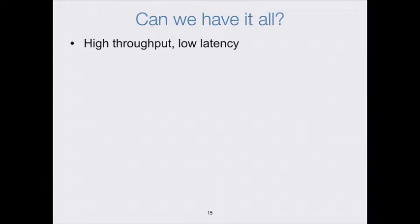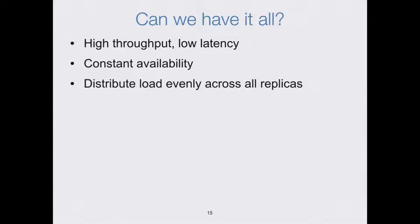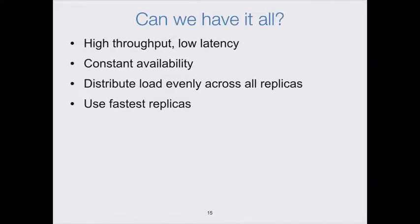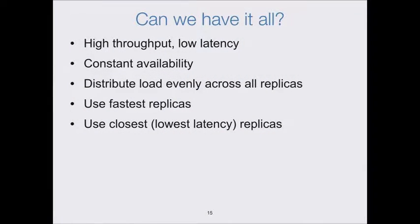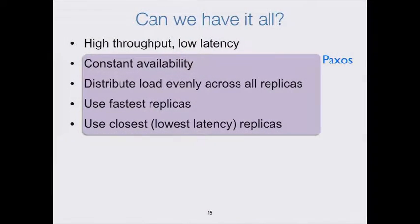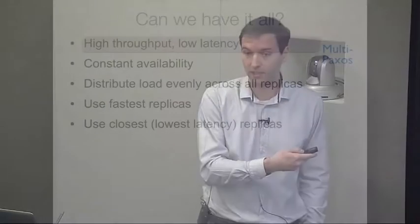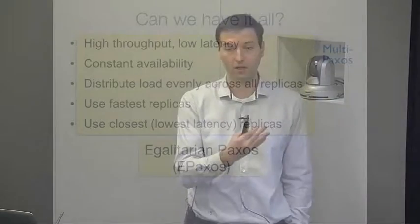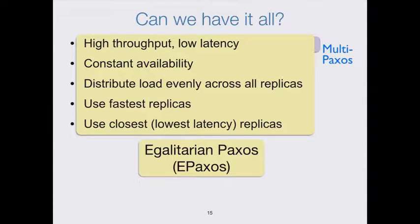The question that motivated our research is: can we have it all? Can we have the high throughput and low latency of multi-Paxos, but at the same time keep the nice properties of canonical Paxos such as constant availability? Can we distribute load evenly across all replicas instead of having one stable leader hotspot? Can we use the fastest and geographically closest replicas to commit commands? Canonical Paxos has all these properties except high performance. Multi-Paxos solves that but loses the other properties. Egalitarian Paxos, by contrast, has all these properties and implements them efficiently — so much so that it has higher performance than multi-Paxos.